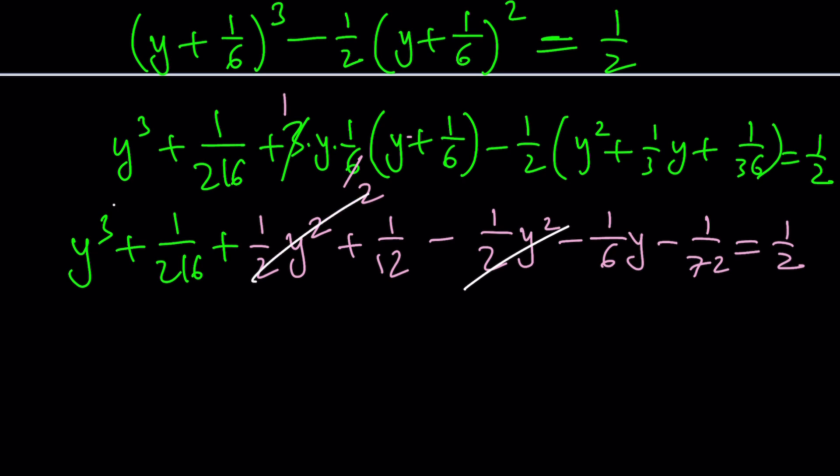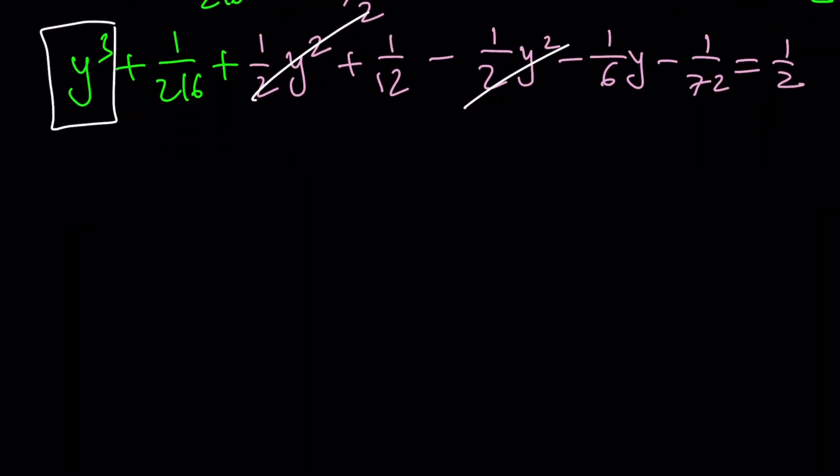So we end up with what is called a depressed cubic, that cubic that only contains y cubed and y in a constant term, which can then be solved with the cubic formula. I'm not going to get into the details. Because, like I said earlier, one of the methods will be incomplete. And it's this one. Okay? So let's go ahead and proceed with the second method.